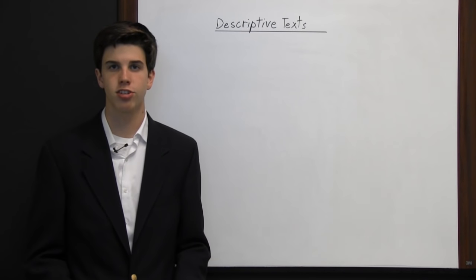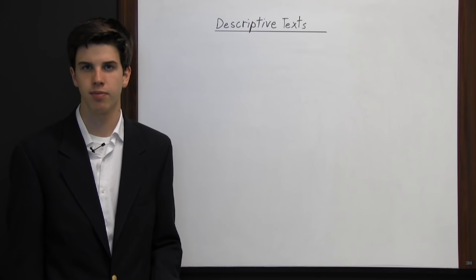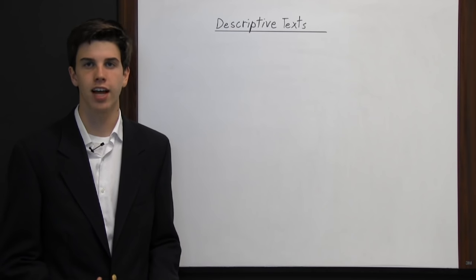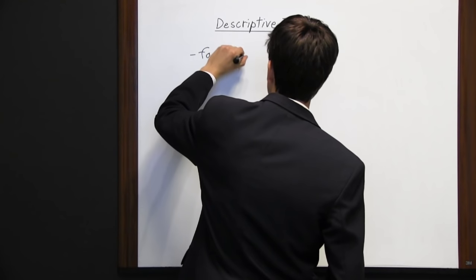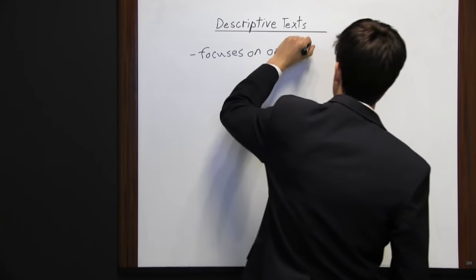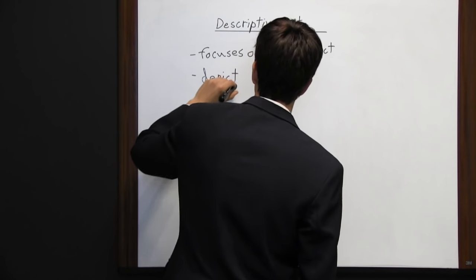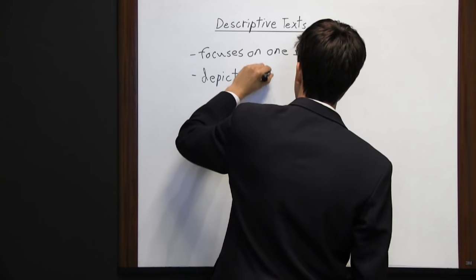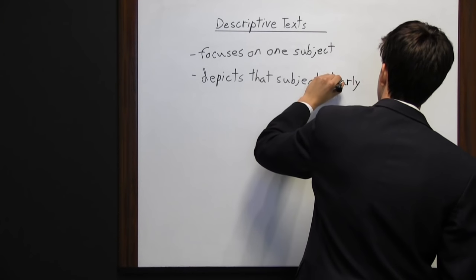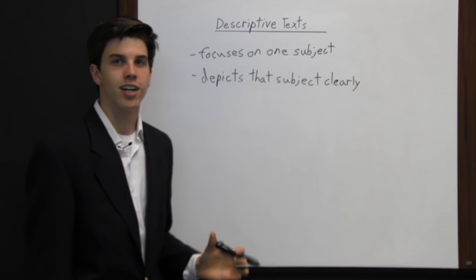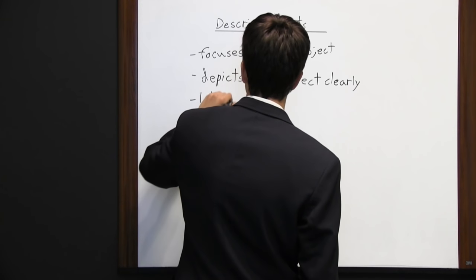Almost any type of writing is descriptive, but a descriptive text is more specific — it takes one particular subject and tries to depict that clearly to the reader. A descriptive text focuses on one subject and uses lots of adjectives and adverbs, lots of descriptive words. As you can imagine, a descriptive text is going to include lots of details.